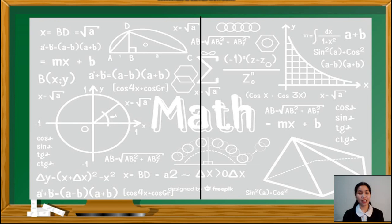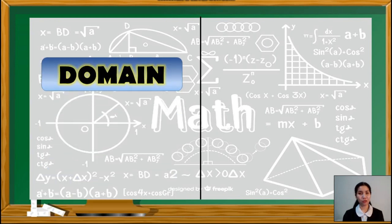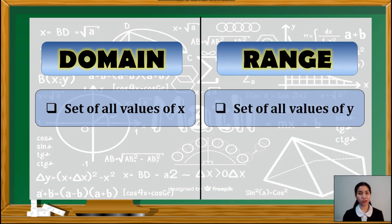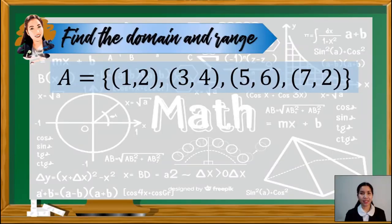But first, let us recall some concepts. Domain refers to the set of all values of x, while range refers to the set of all values of y. Now, let us have an example. Let us find the domain and range of a set of ordered pairs.